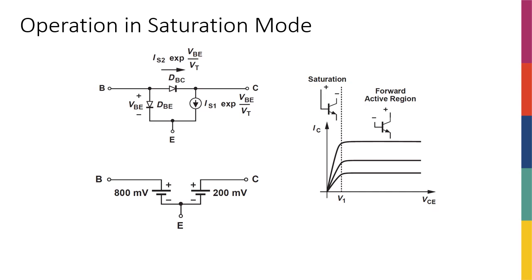It's actually quite instructive to see what happens to our large signal model or our transistor model when we enter the saturation region. When we are in the active region, we have this diode and we have this current source, the controlled current source that was controlled by the voltage of the diode. And this diode here was actually reverse biased.